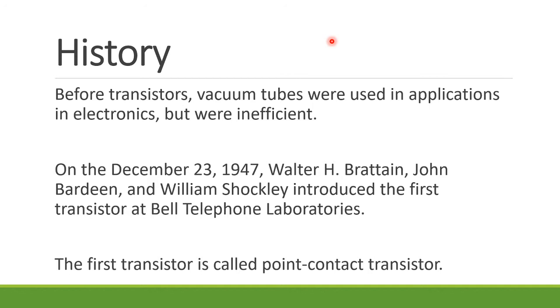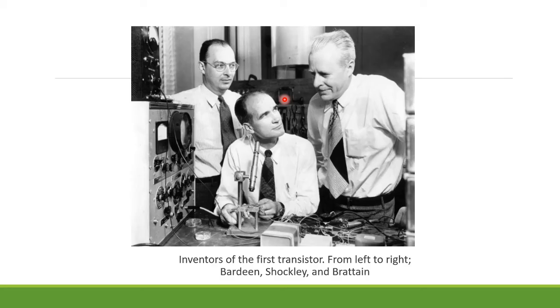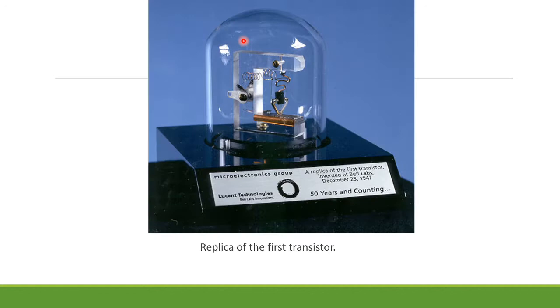A bit of history - December 23, 1947, Walter Brattain, John Bardeen, and William Shockley developed the first transistor. That is the point contact transistor. Before transistors, we used vacuum tubes for switching. These are the inventors. This is in Bell Laboratories, and this is the replica of the first transistor.